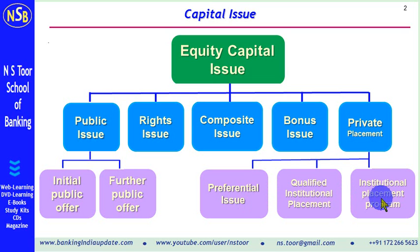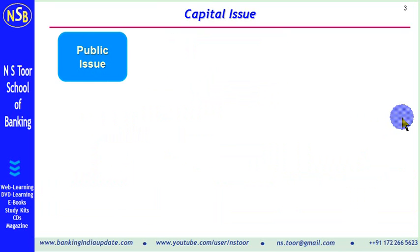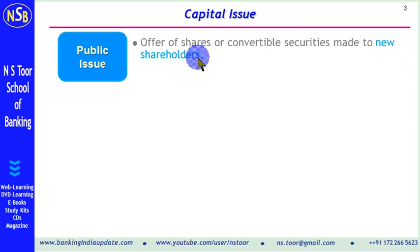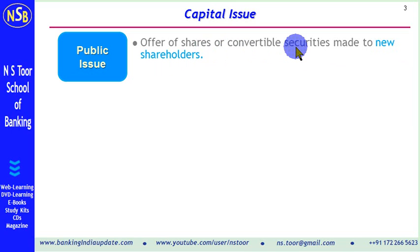We shall now discuss the features of these one by one, starting with public issue. A public issue is an offer of shares or convertible securities made to prospective new shareholders. Convertible securities means securities which will be converted into equity shares after a given time period. When this offer is made to new shareholders, that is called a public issue.